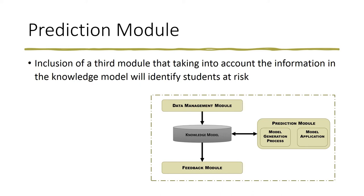In this case, we propose the inclusion of a third module that, taking into account the information in the knowledge model, will identify students at risk. The prediction module is divided into two sub-modules that will be detailed next.